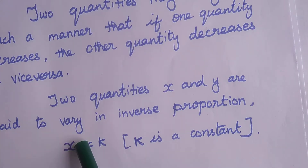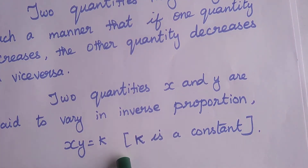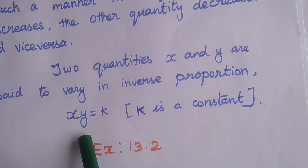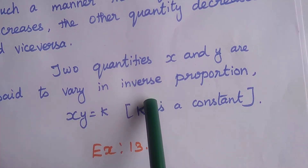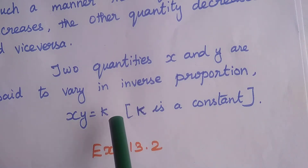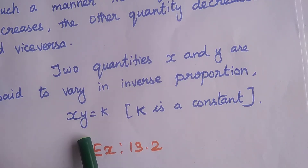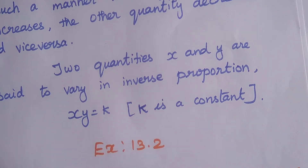Two quantities X and Y are said to vary in inverse proportion. The formula for inverse proportion is XY = K, where K is a constant. In direct proportion we divide, but in inverse proportion we multiply. So XY = K is the formula for inverse proportion.